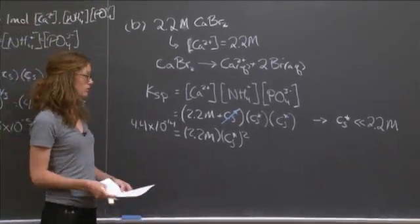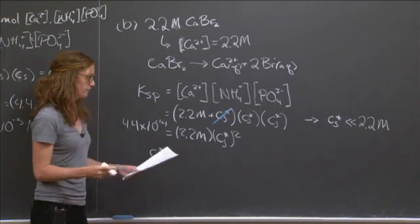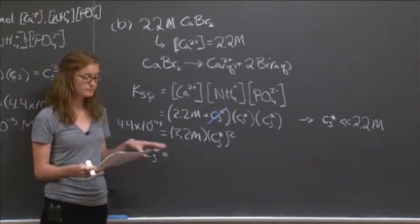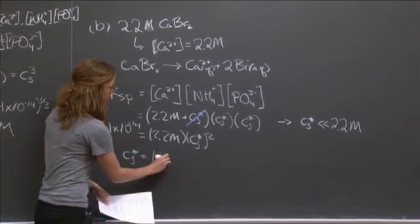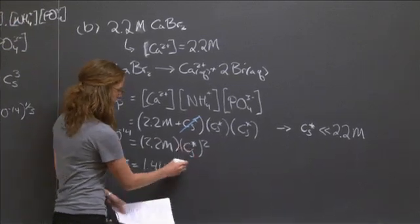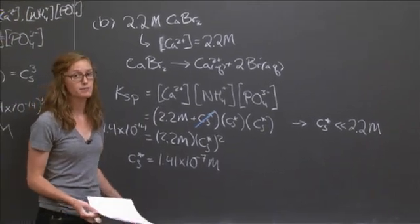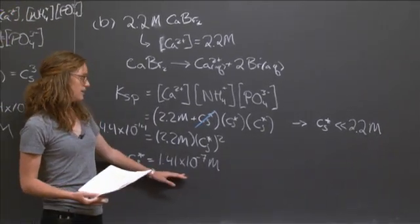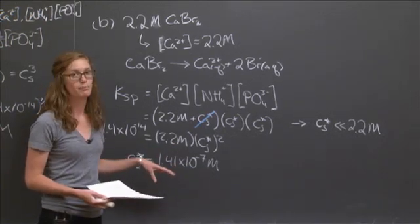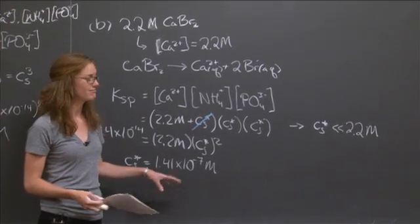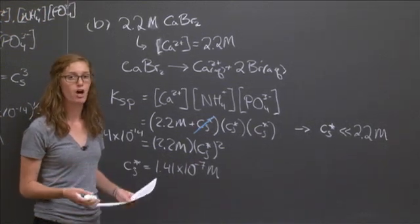Dividing by 2.2 and then taking the square root, we get that the saturation concentration under these conditions, 2.2 molar calcium bromide, will be 1.41 times 10 to the negative 7 molar. And going back to our answer from Part A, we see that this is indeed a lower solubility. There's less calcium ammonium phosphate that can be dissolved. And that makes sense from our previous thought about this problem.